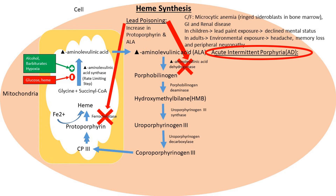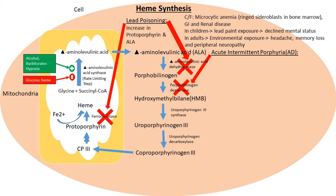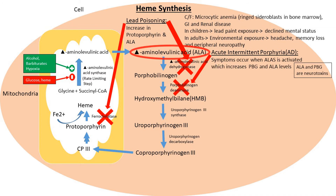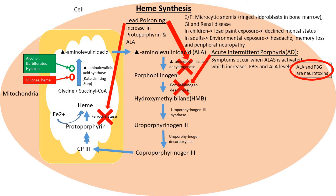The next disorder is acute intermittent porphyria (AIP). It is an autosomal dominant disease due to a congenital deficiency of the enzyme porphobilinogen deaminase. Normally patients are asymptomatic, but when symptoms do occur, they present in an acute intermittent fashion, hence the name. Symptoms arise due to a rise in levels of aminolevulinic acid and porphobilinogen, which are neurotoxins that damage the nerve supply.